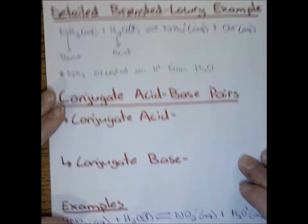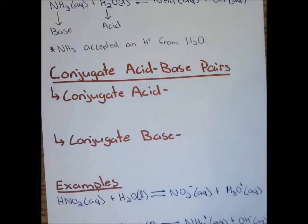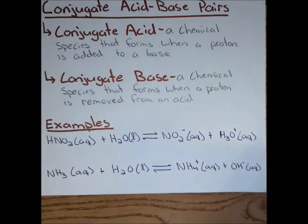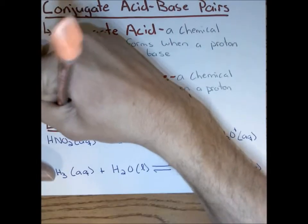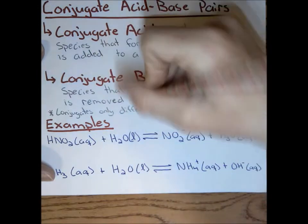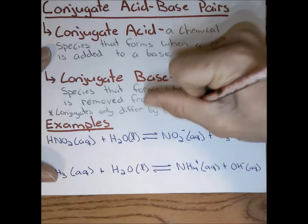We can go further and get into conjugate acid and base pairs. A conjugate acid is a chemical species that forms when a proton is added to a base. A conjugate base is a chemical species that forms when a proton is removed from an acid. Importantly, conjugates only differ by one proton — that's the only difference.